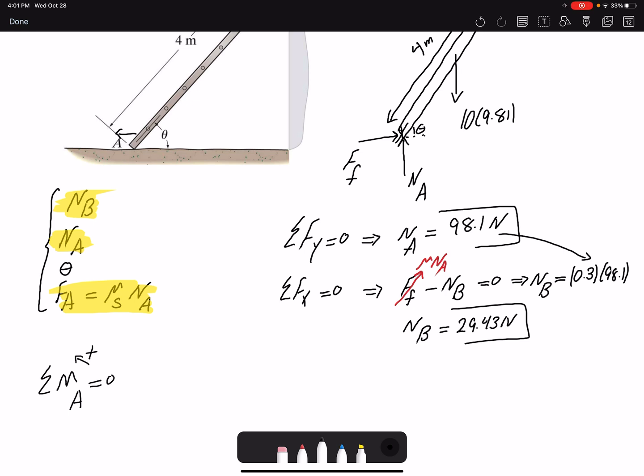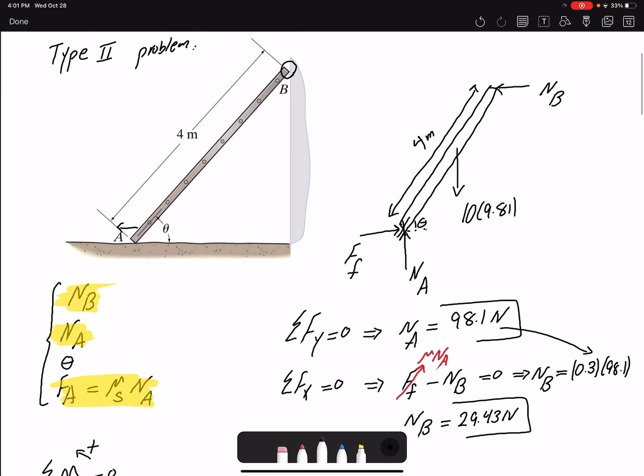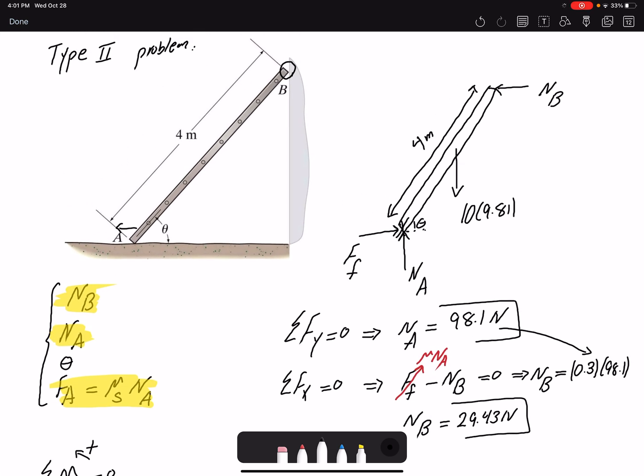There are two forces creating a moment. Nb is creating a positive moment because it's rotating my member counterclockwise about point A. The weight is creating a negative moment because it's rotating clockwise. What is the moment arm for Nb? The moment arm is this distance, which is 4 sine theta.